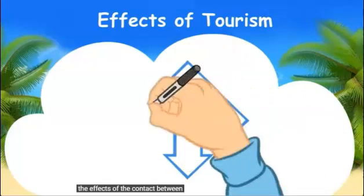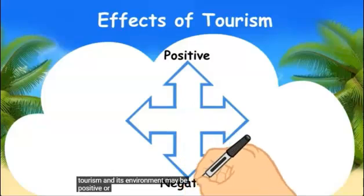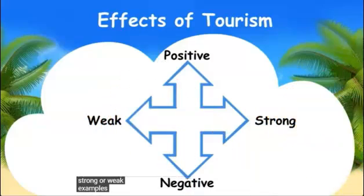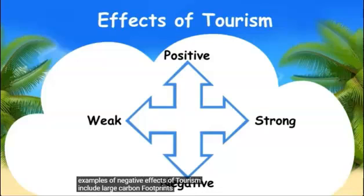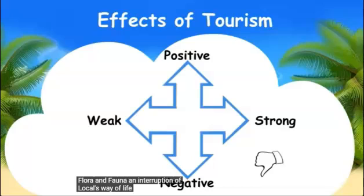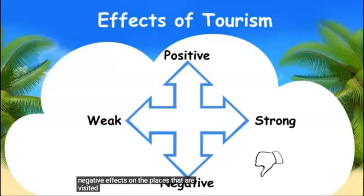The effects of the contact between tourism and its environment may be positive or negative, and they may be strong or weak. Examples of negative effects of tourism include large carbon footprints, strain on natural resources, disturbance of flora and fauna, and interruption of locals' way of life. Everyone involved in tourism has a responsibility to make sure that their activity does not have too many strong negative effects on the places that are visited.